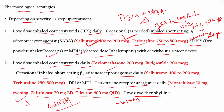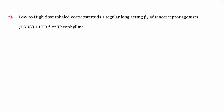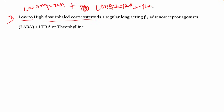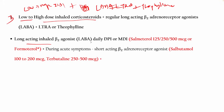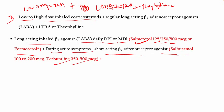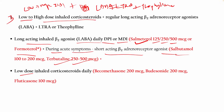Step 3 moves from low to high-dose inhaled corticosteroids, and from SABA we now add LABA (long-acting beta-2 agonist), LTRA (leukotriene antagonist), and theophylline. LABA options via MDI include salmeterol 125, 250, or 500 mcg or formoterol. During acute symptoms, short-acting beta-2 agonists at 250–500 mcg can also be given.